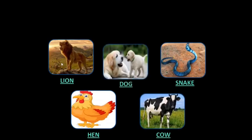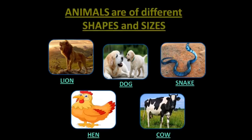Children, from the picture, what did you notice? Yes, all animals — whether it is a lion or a dog or a hen or a cow or a snake — all are of different shapes and the sizes are also different. We conclude that animals are of different shapes and sizes.